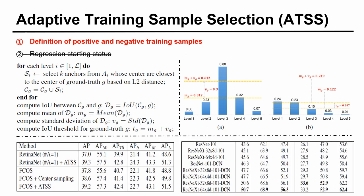ATSS adaptively selects positive and negative samples according to statistical characteristics of objects, improving the performance of anchor-based and anchor-free detectors without introducing any overhead.